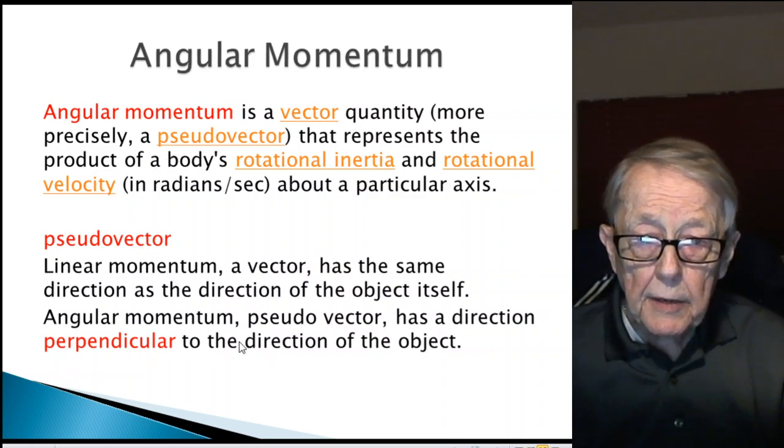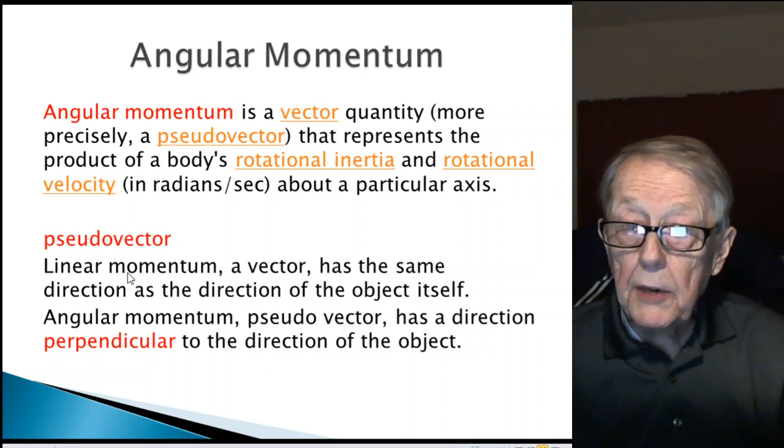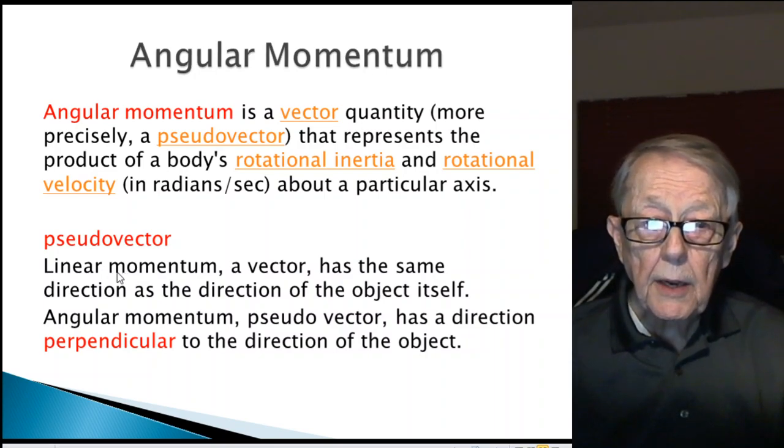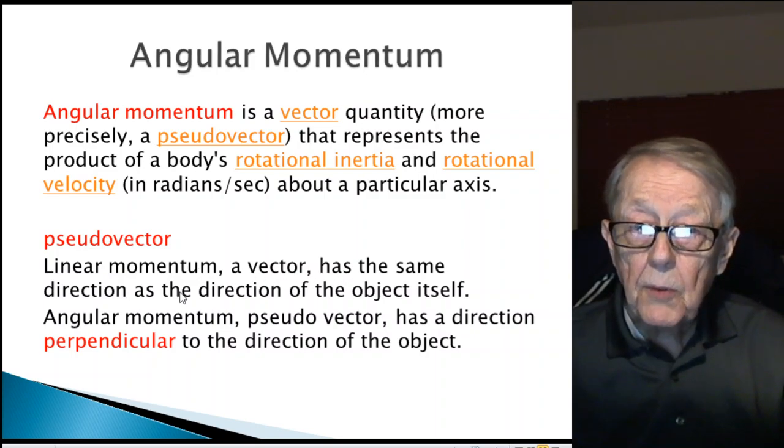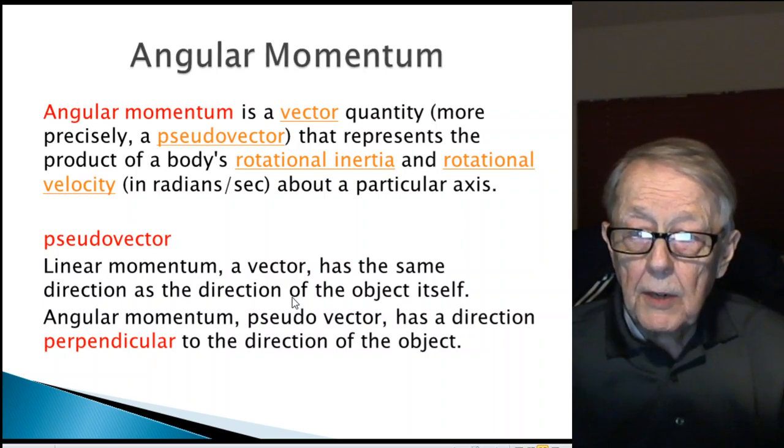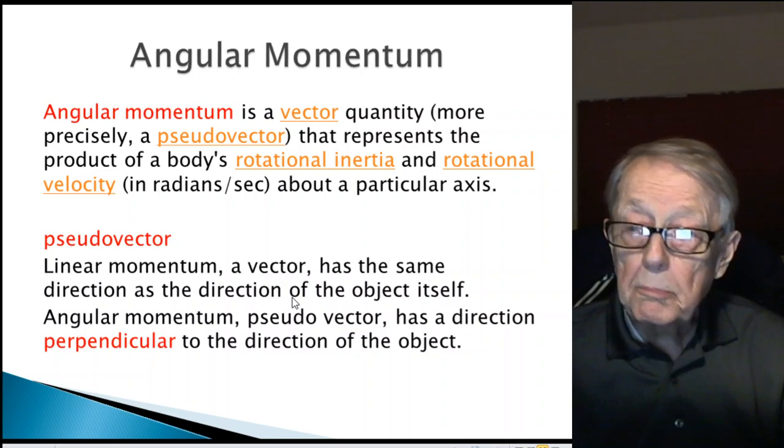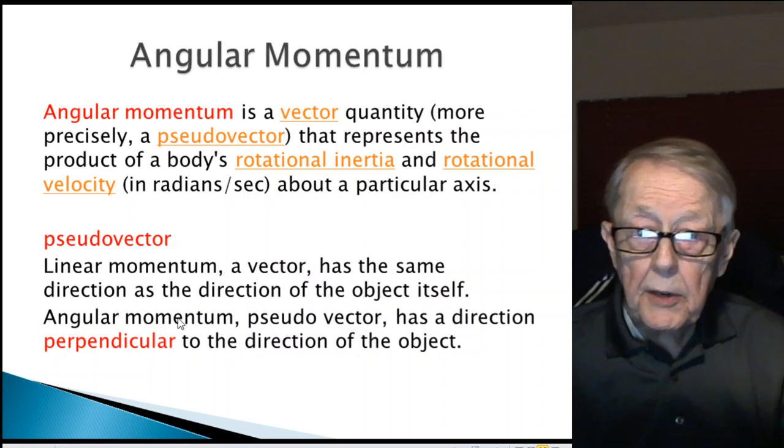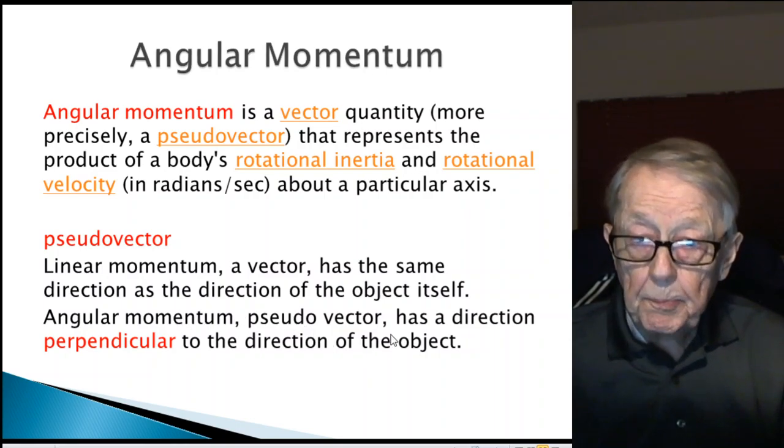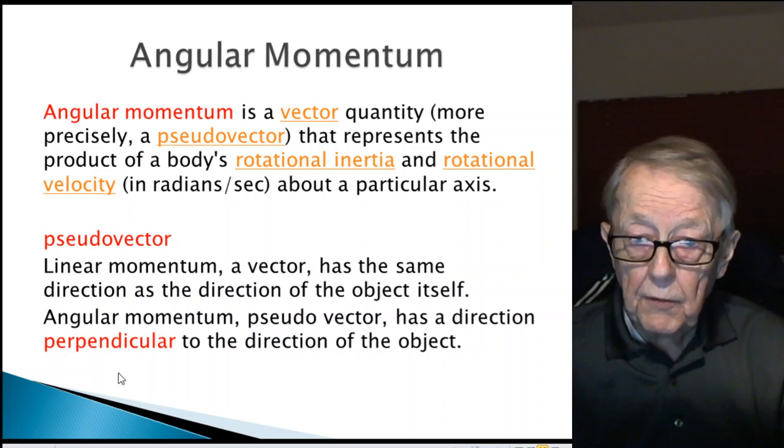Angular momentum is a pseudo-vector. Before that, I decided to compare it to linear momentum. Linear momentum is a vector as well, but that vector has the same direction as the object itself. For example, if you have an object moving in the positive x-direction, then the momentum vector moves in the same direction. But when it comes to angular momentum, which is a pseudo-vector, it has a direction perpendicular to the direction of the object.